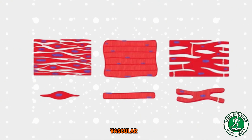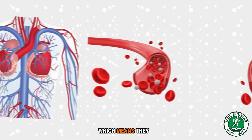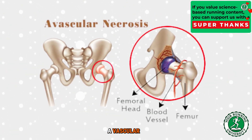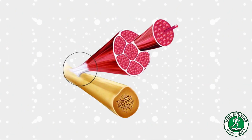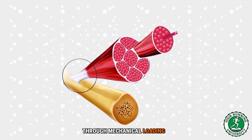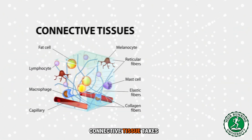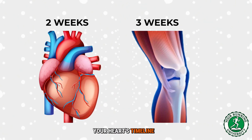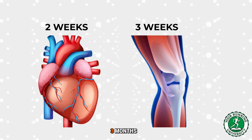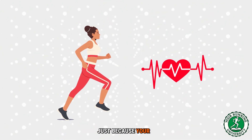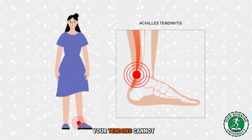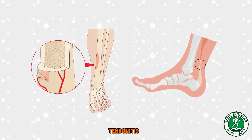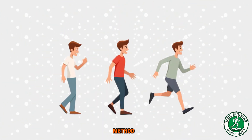Let's look at the anatomy. Muscles are red tissue — they are vascular, they have a massive blood supply, which means they recover and adapt in days. Tendons are white tissue — they are avascular, they have very poor blood supply. They feed primarily through mechanical loading. Because of this poor blood supply, connective tissue takes three to four months to adapt to the impact forces of running. There is a massive gap between your heart's timeline of two weeks and your tendons' timeline of three months.